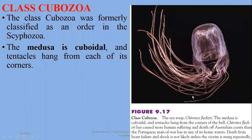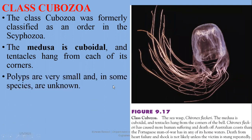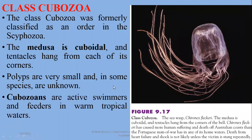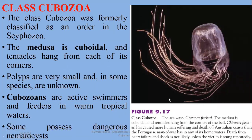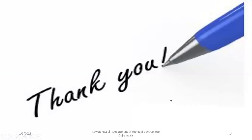Class Cubozoa was formerly classified as an order within Scyphozoa. Cubozoans have a cuboidal medusa form; polyps are very small and in some species unknown. Medusa is the dominant stage. Cubozoans are active swimmers and feeders in warm tropical waters. An example is Chironex fleckeri — the sea wasp — whose cuboidal medusa has tentacles hanging from the corners of the bell. It has caused more human deaths along the Australian coast than the Portuguese Man-of-War, with death from heart failure and shock possible from repeated stings.